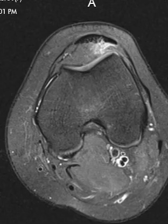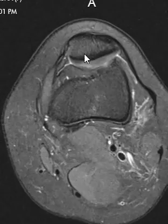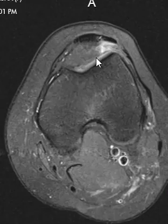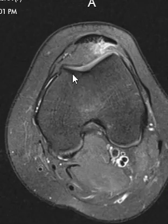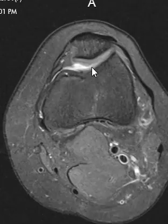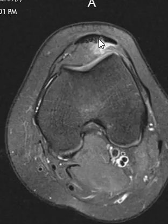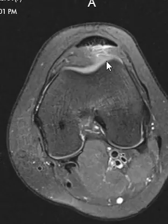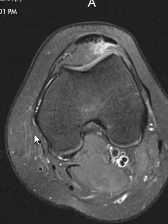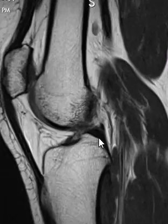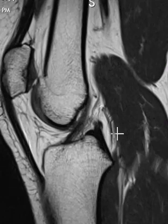We call this fatty impingement. It's the mechanics of your patella — when your patella rubs along on this femur, along the part of the femur that it glides on, it has abnormal mechanics of stress and it's pinching the fat right here. We call this fatty impingement, and you get pain in the anterior knee.